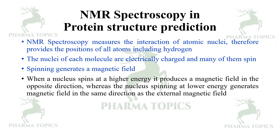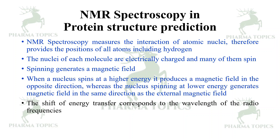If they align, then the nucleus is said to be at the lower energy level. If they oppose, then the nucleus is said to be at the high energy level. The shift of energy transfer corresponds to the wavelength of the radio frequencies.